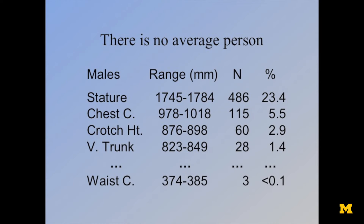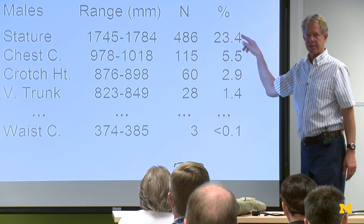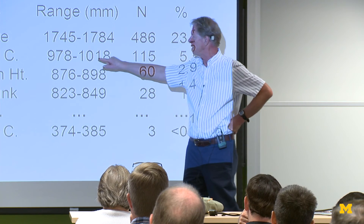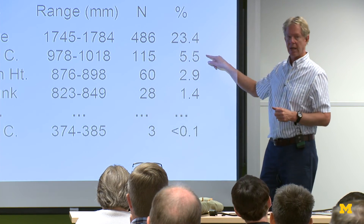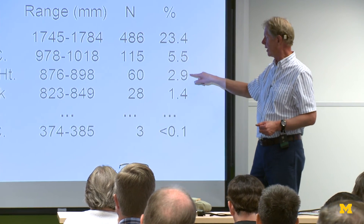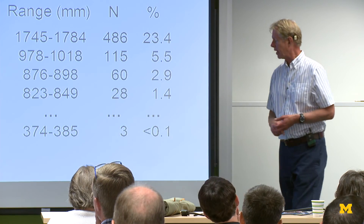Just as there is no 5th percentile and no 95th percentile person, there is no average person either. From a large sample, I took a stature mean value plus or minus a third of a standard deviation — just a small group right in the middle. 23% of my sample was at mean stature plus or minus a little bit. Of those, how many also have a mean chest circumference — mean plus or minus a third of a standard deviation? The answer is 115 people, or 5.5%. Of those 115, how many also have a mean crotch height? The answer is 3%. Continuing this to 8 dimensions, I'm down to less than 0.1%.